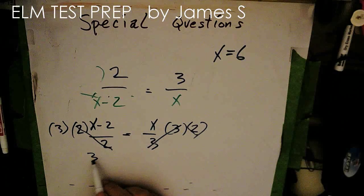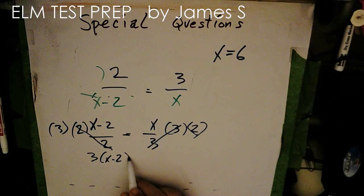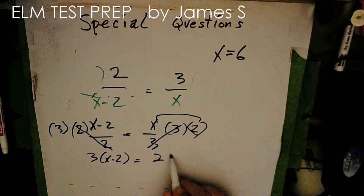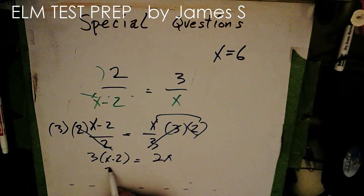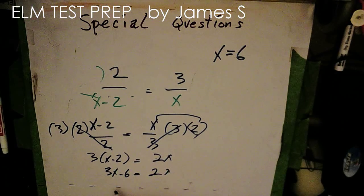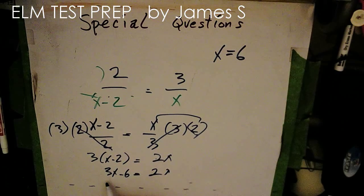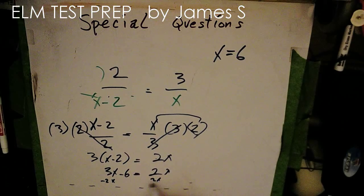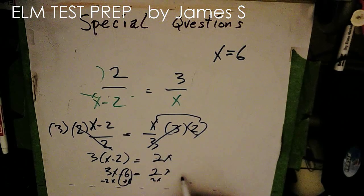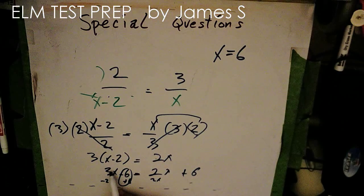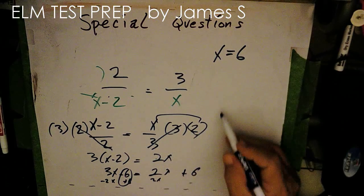I then get 3 times x minus 2. And you're probably already seeing that I'm ending up with the same thing. 2x. And then I'll get 3x minus 6 equals 2x. And if I subtract 2 from here, I'll take 2x away from this side and 2x over here. Then I'll add 6 to get rid of that. So that makes it a 6.